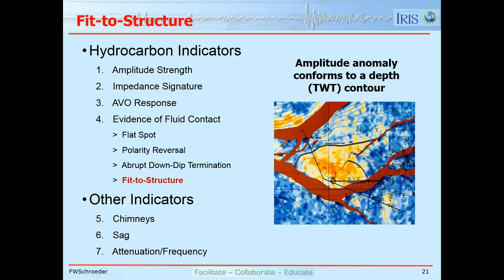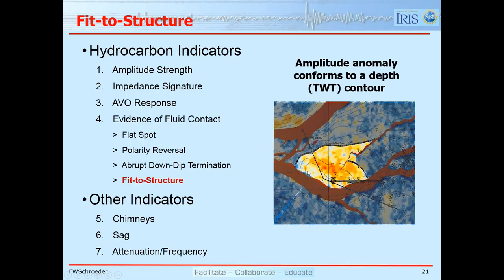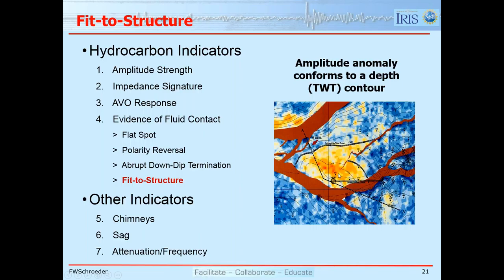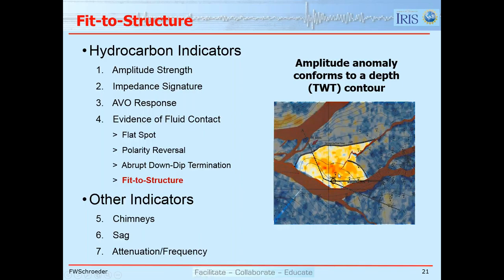Fit to structure means that if we have an amplitude anomaly and we have depth or two-way time contours, the anomaly should conform to a particular depth contour. If the overlying velocity variations are insignificant, a time contour will also conform. Here's the amplitude along the horizon — removing the shading, we can see the edge of the hydrocarbon conforming quite nicely to a particular depth contour.